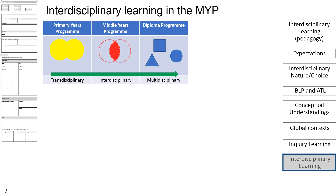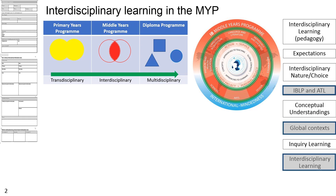It is important for learners to value the interrelation between disciplinary content and the power of the synthesis of these. In the DP, the teaching and learning approach becomes multidisciplinary, although there are still opportunities in the theory of knowledge that supports interdisciplinary understanding by exploring the similarities and differences of knowledge in areas of knowledge and ways of knowing. Interdisciplinary teaching and learning is a key feature in the MYP that supports adolescents in making connections with the ever-changing world as they transition through personal, social, physical and intellectual growth. The subject groups in the MYP provide many natural opportunities for students to work within multidisciplinary perspectives and address inquiries between them.